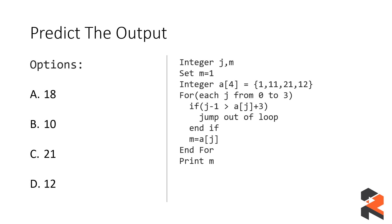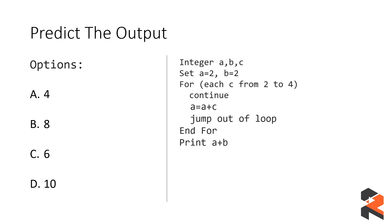Let's look at another question. Here you have three variables a, b, and c. Variables a and b are storing two values, and then there is a for loop, following which you have to print the output. I would request you to pause the video, try the question on your own, and then evaluate the answer.